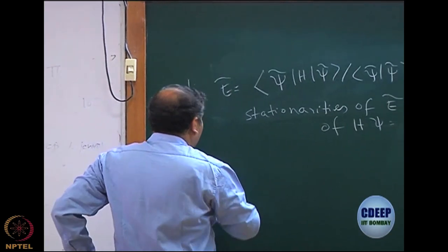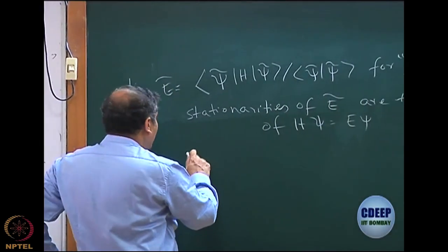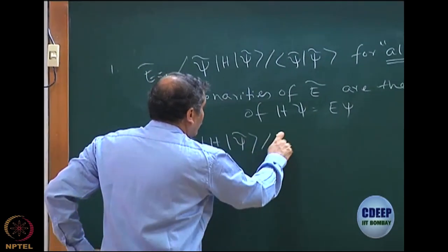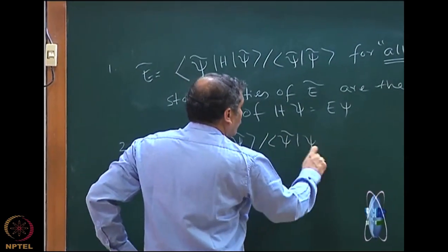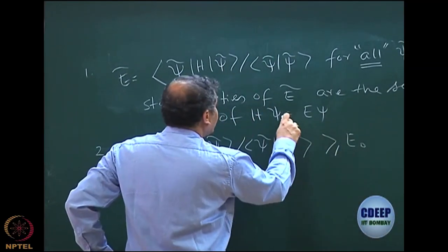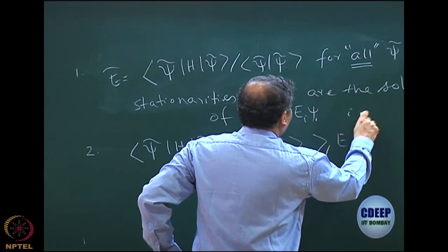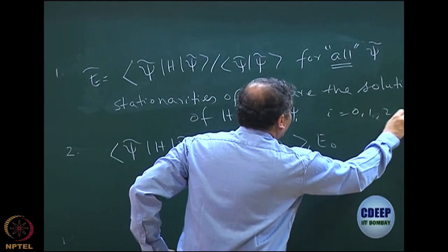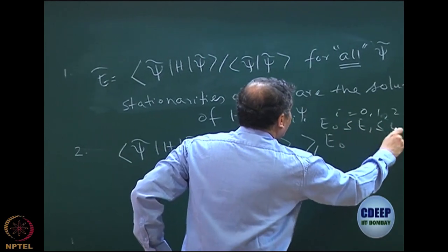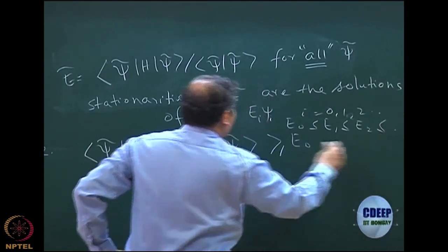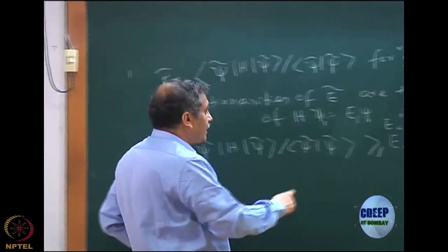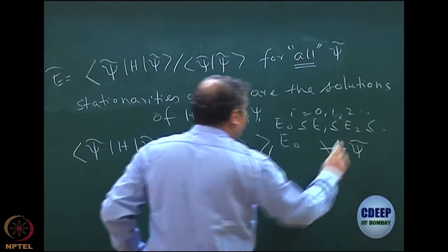The second theorem states that given any psi tilde, E tilde is always greater than or equal to E naught, where E_0 ≤ E_1 ≤ E_2 and so on, with E_0 being the lowest. So for any arbitrary psi tilde, the energy expectation value is always greater than or equal to E_0.